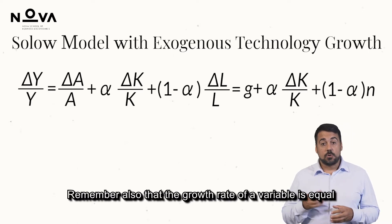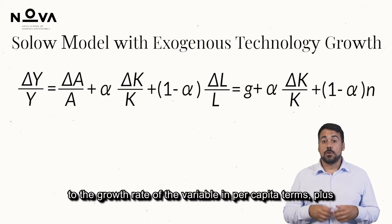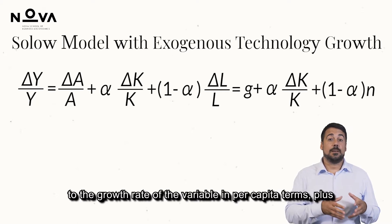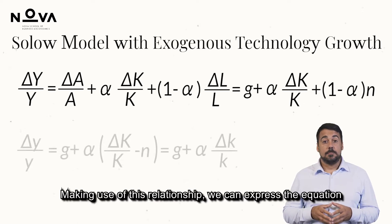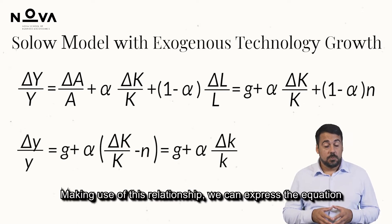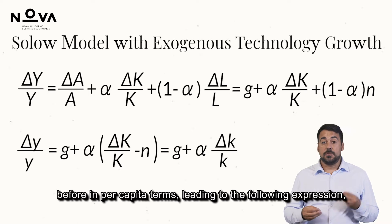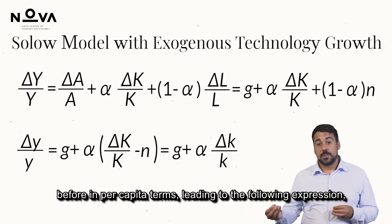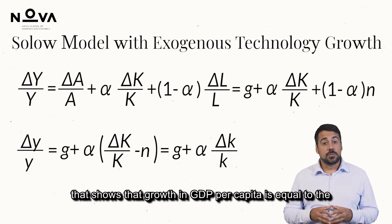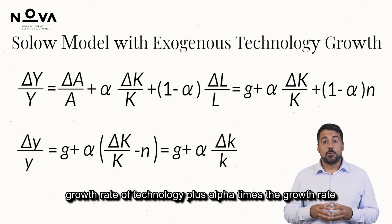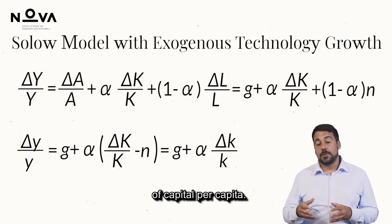Remember also that the growth rate of a variable is equal to the growth rate of the variable in per capita terms plus the growth rate of population. Making use of this relationship, we can express the equation in per capita terms, leading to the following expression that shows that growth in GDP per capita is equal to the growth rate of technology plus alpha times the growth rate of capital per capita.